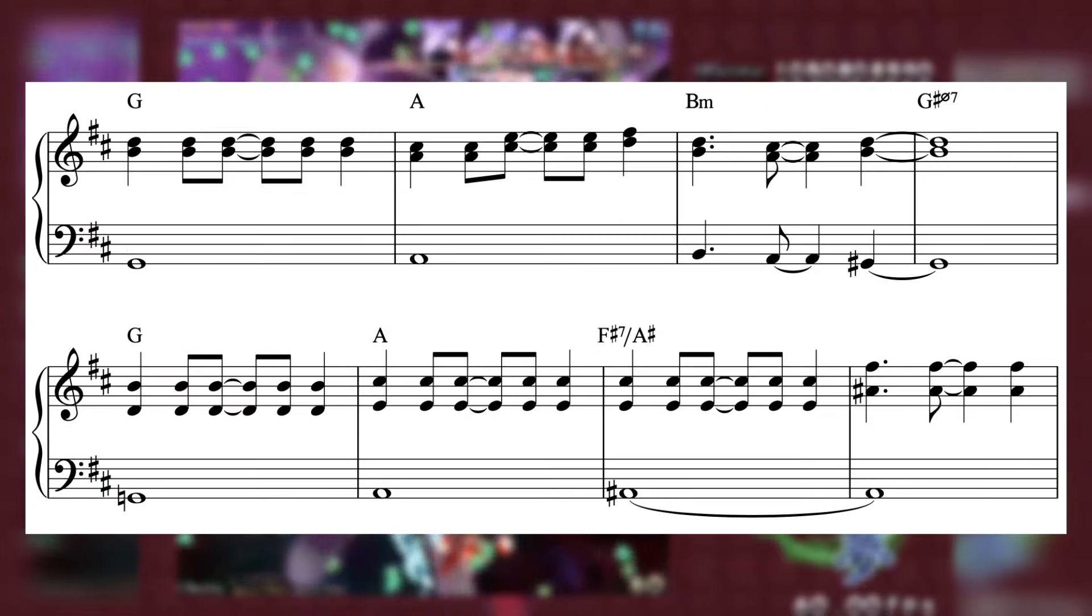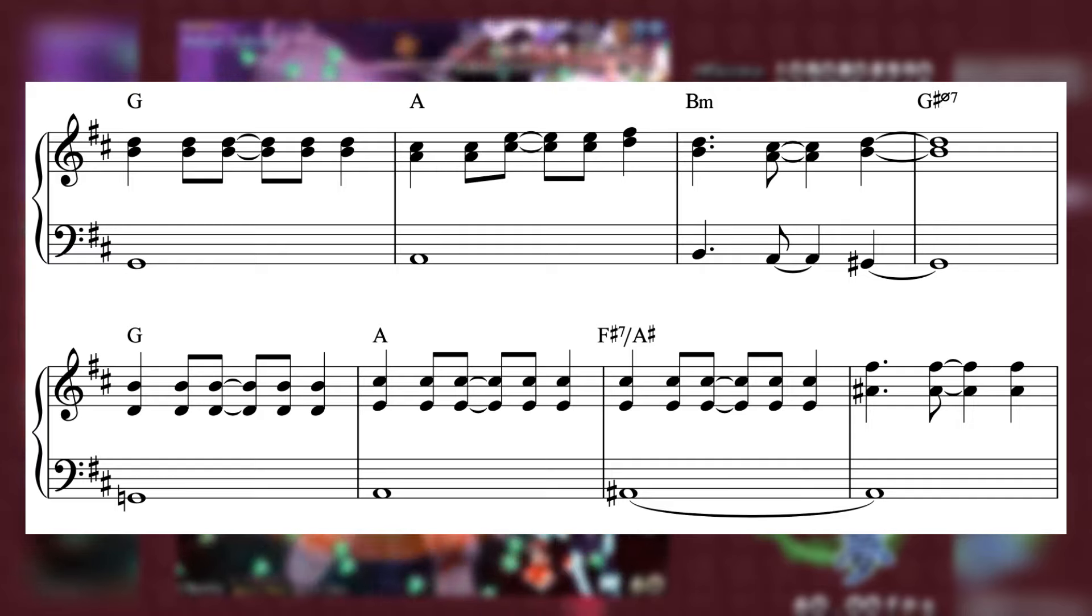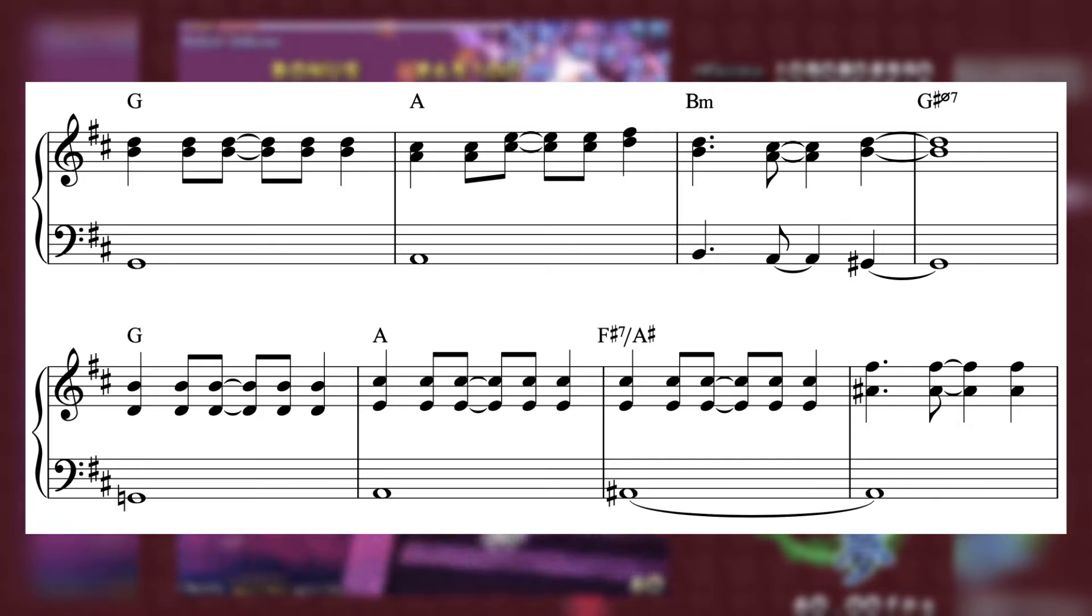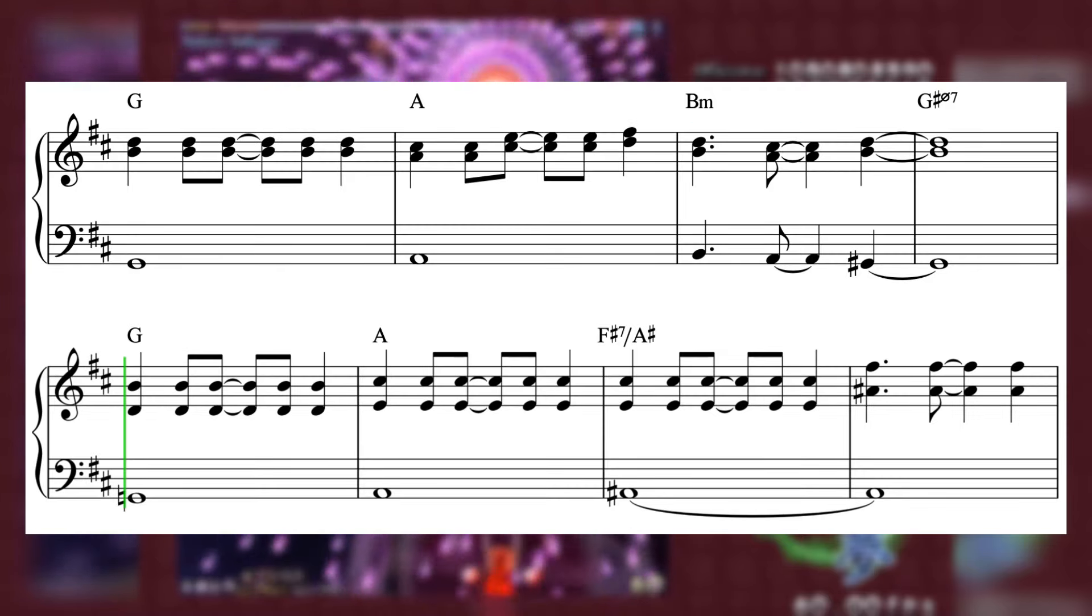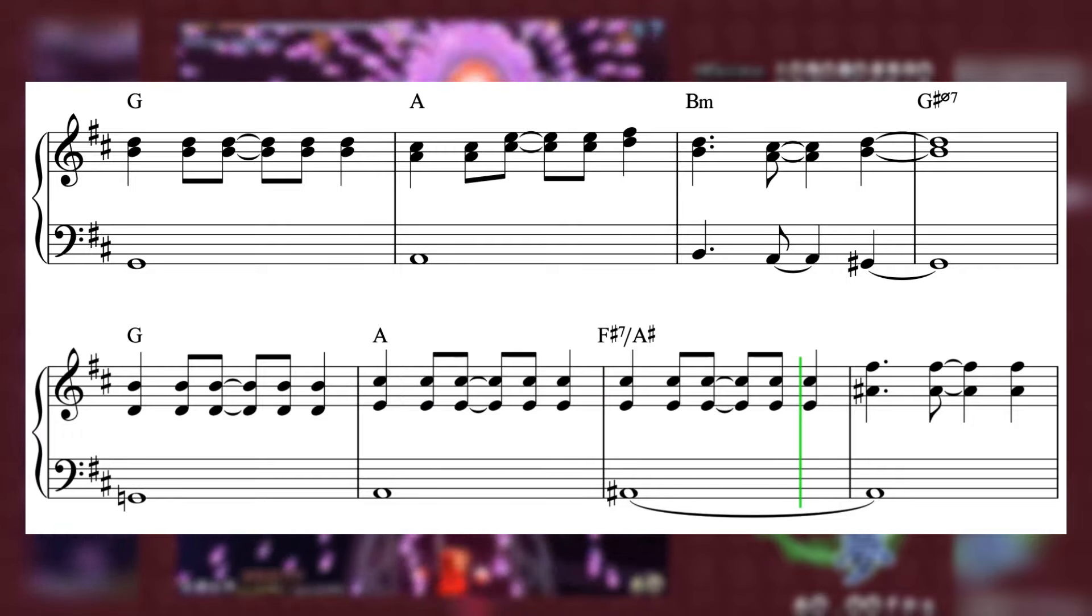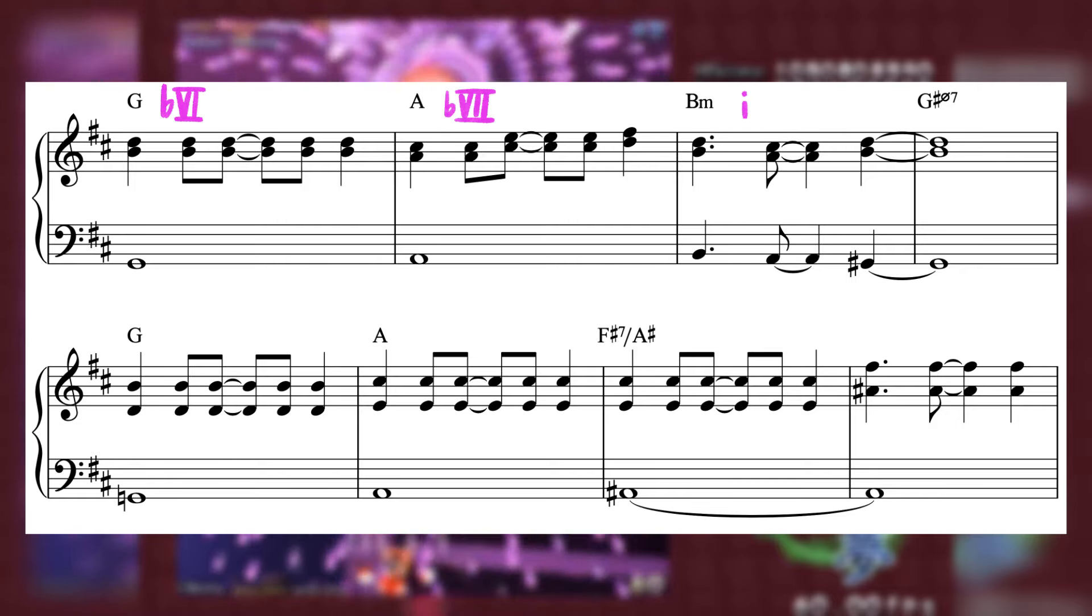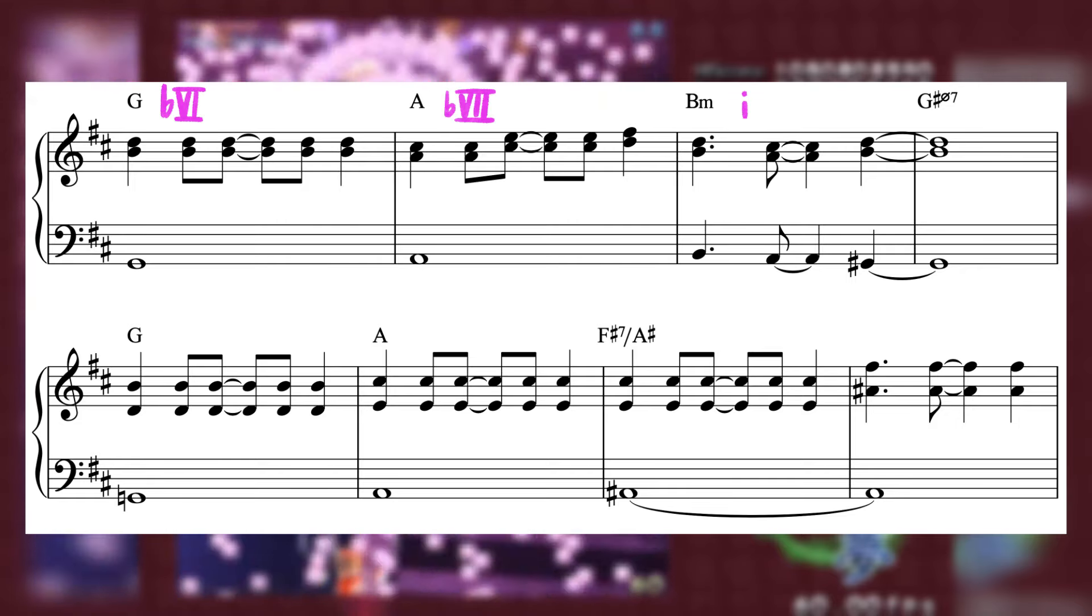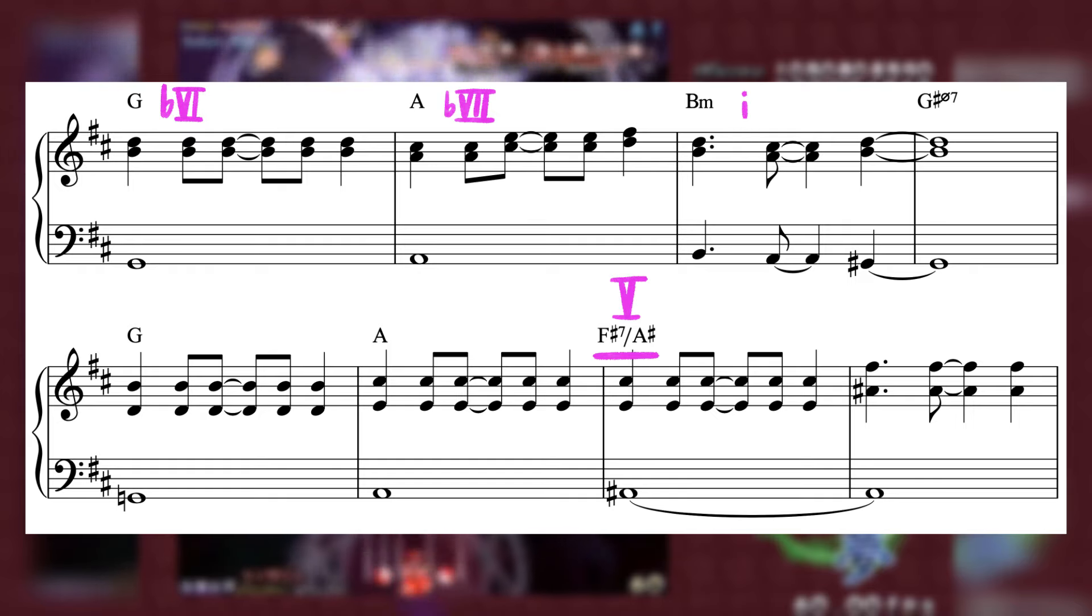Skipping ahead a little bit, a more subdued section in B Minor brings down the intensity and acts as a transition into the climax of the song. Sort of a calm before the storm approach. Notice the use of Zune's go-to b6 b7-1 progression here, interrupted on the second phrase by a first inversion 5 chord, this F sharp 7 over A sharp.